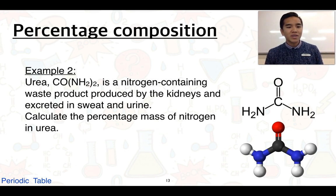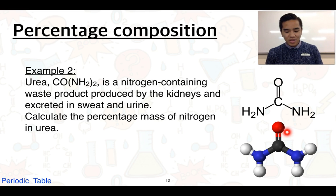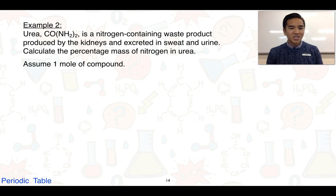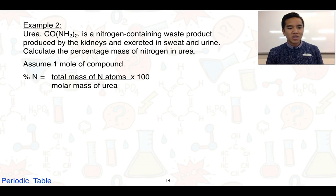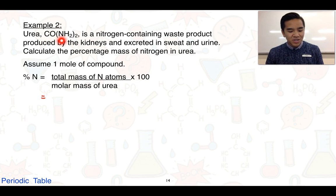Our second example is about urea, a nitrogen-containing waste product produced by our kidneys and excreted in sweat and urine. The question asks us to calculate the percentage mass of nitrogen in urea. Here is the structural formula showing how the atoms are arranged. We assume one mole of the compound. The number of nitrogens is two, because we have N in brackets with a two outside. Because inside the brackets we have two hydrogens already, multiplying by two gives us four hydrogens in total.